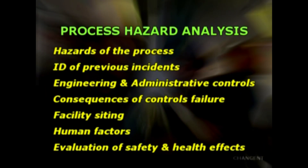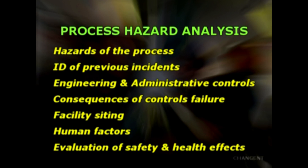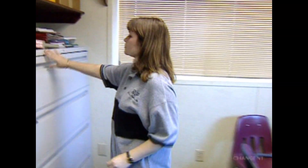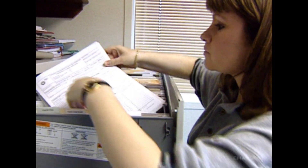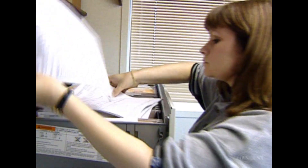Regardless of the method employed, the process hazard analysis must address at least: the hazards of the process, identification of any previous incident with potential for catastrophic consequences, engineering and administrative controls and their interrelationships, consequences of failure of those controls, facility siting, human factors, and a qualitative evaluation of possible safety and health effects on employees if controls fail. Employers must keep all process hazard analyses and updates on file. A documented list of resolutions for all recommendations must be kept for the life of the process.